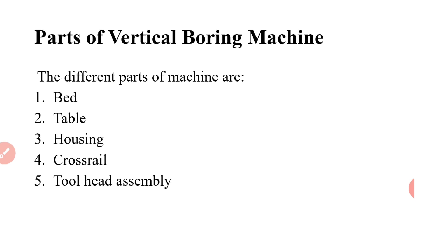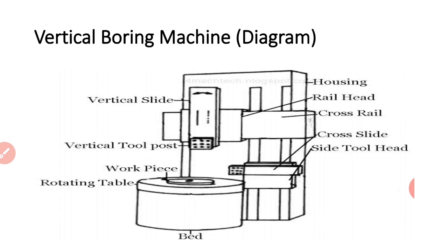Now, parts of vertical boring machine. These are bed, table, housing, cross rail, and tool head assembly. This slide shows the vertical boring machine diagram, and we have seen the parts of the board.